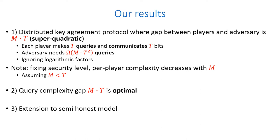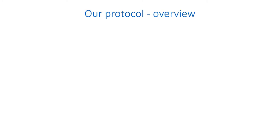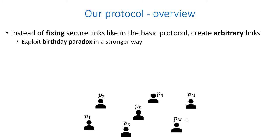Furthermore, we show an extension to our protocol for the semi-honest model, in which the adversary controls some of the players that participate in the protocol. In our protocol, instead of fixing secure links, we create arbitrary links. This allows us to exploit the birthday paradox in order to find intersections in a larger domain.